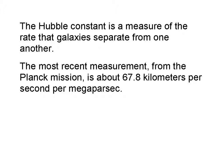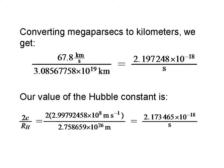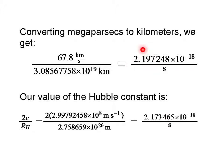Now the Hubble constant is a measure of the rate that galaxies separate from one another. The most recent measurement from the Planck mission is about 67.8 kilometers per second per megaparsec of separation. If we convert megaparsecs to kilometers for easy comparison, we take our Planck mission value of 67.8 km/s/Mpc and convert that to kilometers, and we get a value for the Hubble constant of about 2.197 × 10⁻¹⁸ per second. Our value for the Hubble constant — 2c over r_h — comes to 2.173 × 10⁻¹⁸ per second. You find these numbers are almost spot on.